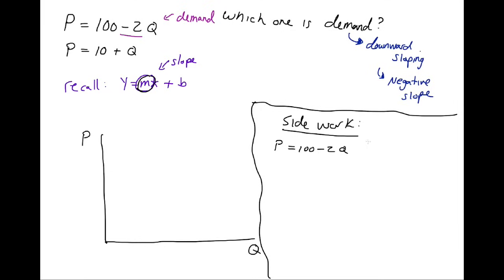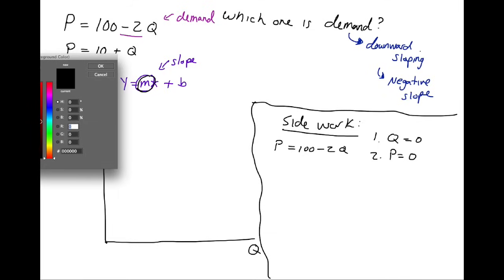The two points we're going to find will be when Q equals 0 and when P equals 0. So let me color code these.